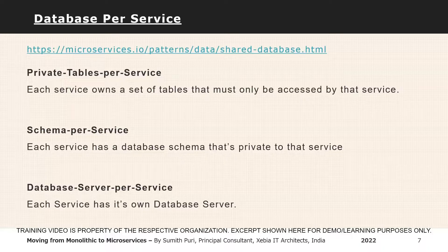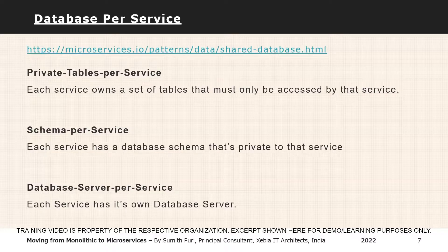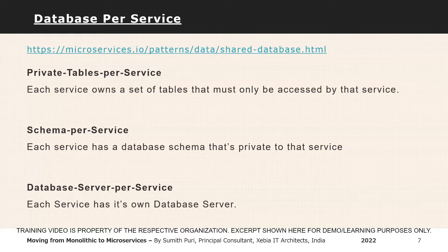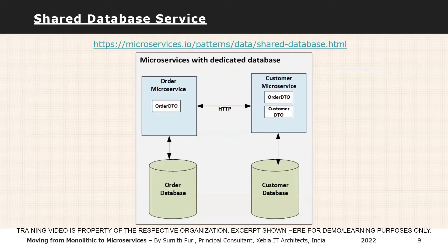Highest scalability comes from database server per service. Schema per service and private tables per service are valid because the database semantics — including removal of cross-service joins — improve performance to some extent. This is the actual theory for database per service and there's a link to read more. You need to understand all three variations so please follow that link.